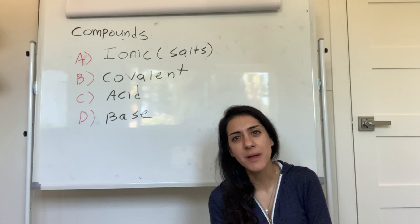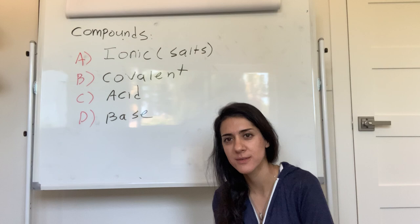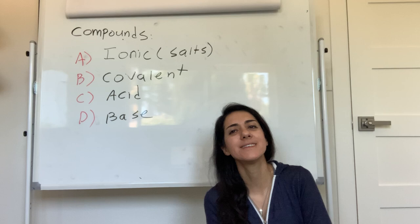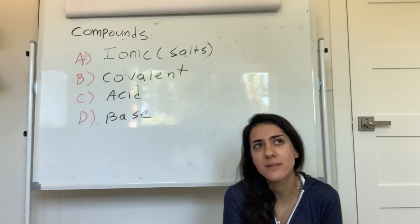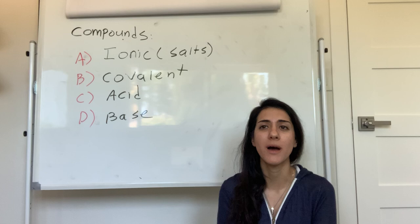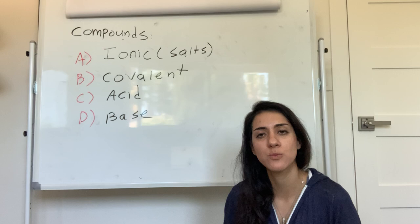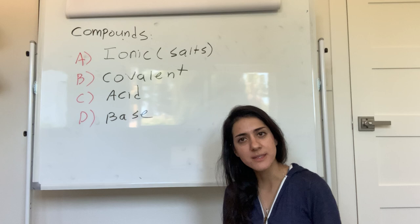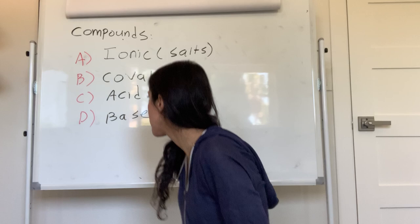Why do you think elements want to form compounds? One thing you'll hear me say in class all the time is that elements act a lot like human beings. Why do humans want to be in a relationship? Stability — and it's the same thing with elements. Elements want to form compounds because when you form a compound, you're more stable. Stability is a driving force for a lot of things.